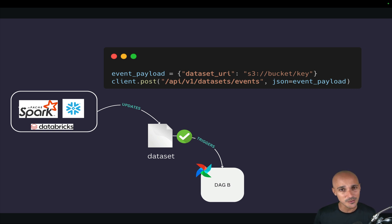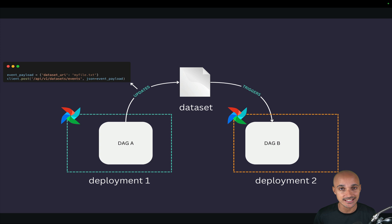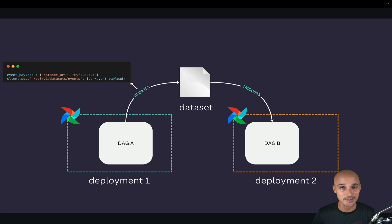This opens up other possibilities. For example, if you have two Airflow deployments — deployment 1 and deployment 2 — DAG A in deployment 1 updates a dataset and sends the request to deployment 2, indicating that the dataset has been updated, which triggers DAG B in deployment 2. So you are able to create cross-dependencies between multiple Airflow deployments with ease.